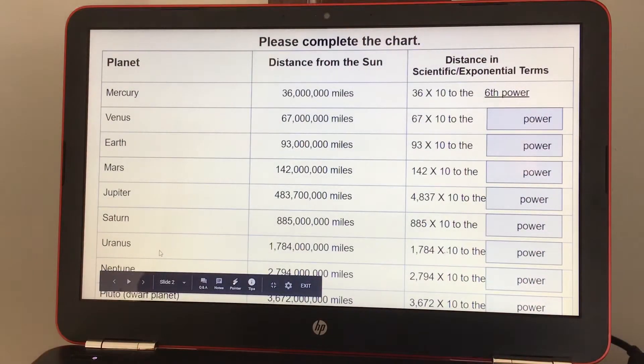On the left side it tells you all the planets and the distance from the Sun, how many miles, and the distance in scientific exponential terms.